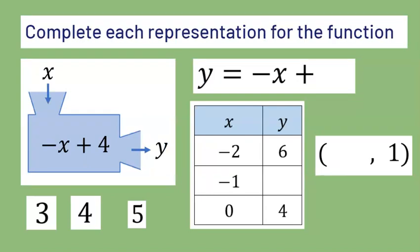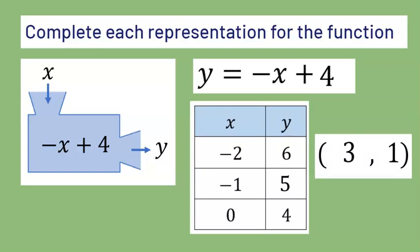These are three different representations of the function represented by the function machine. Take the numbers 3, 4, and 5 and place them in the correct place. The expression inside the box was negative x plus 4, so the equation is y equals negative x plus 4. In the table, when the input is negative 1, negative negative 1 is positive 1 plus 4 gives output 5, so you place 5 in the table. For the ordered pair with output 1: subtract 4 to get negative 3, then divide by negative 1 to get positive 3. So the input is positive 3 and the output is positive 1.